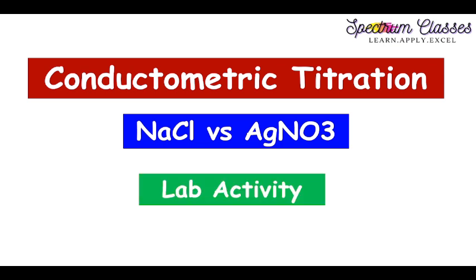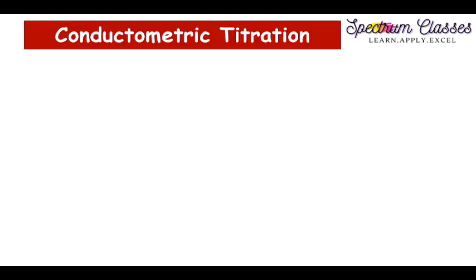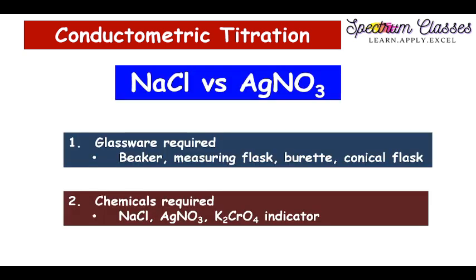Now I am going to show you first the lab activity, but before showing the lab activity I am just going to summarize what kind of instruments and glasswares we require. For this titration we require: beaker, measuring flask, burette, conical flask, and the chemicals required are NaCl, AgNO3, and K2Cr2O7 as an indicator, just to measure the concentration of NaCl by using this indicator method.